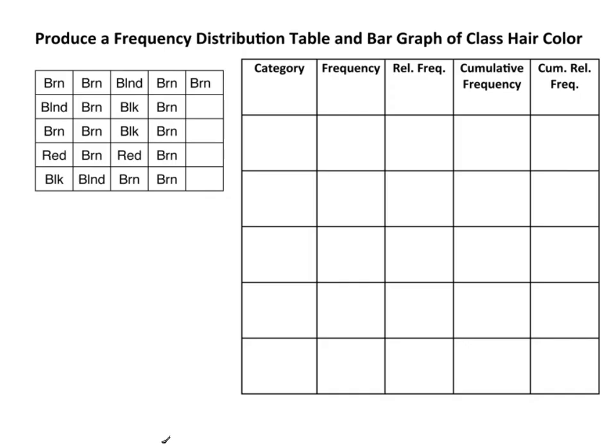Now I want to produce a bar graph of hair color. This is a hair color that was collected from a class or something. So I have my categories. You see, brown. Let's make brown my first category. And how many are there? There's 1, 2, 3, 4, 5, 6, 7, 8, 9, 10, 11, 12. Looks like there's 13 of these guys. So that makes my frequency 13.